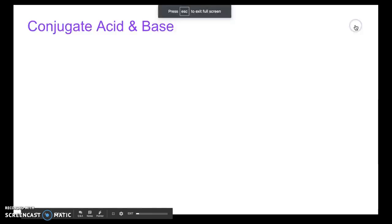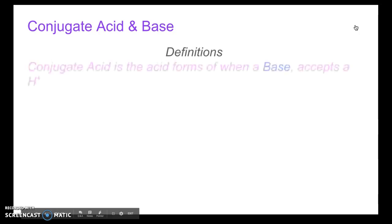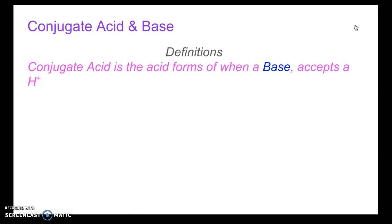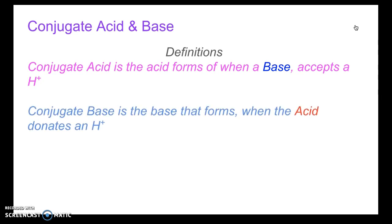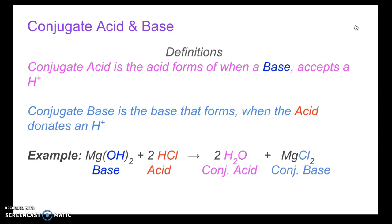Okay, so welcome back. I just want to recap and summarize some of the things that you learned. Conjugate acid is the acid that forms when a base accepts a proton. The conjugate base is the base that forms when the acid donates a proton. And here's an example of that. So here we have the base, magnesium hydroxide, and HCl is the acid. And H2O is the conjugate acid of the magnesium hydroxide base. And magnesium chloride is the conjugate base of the acid.